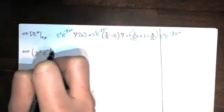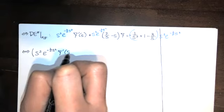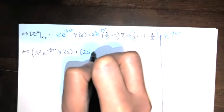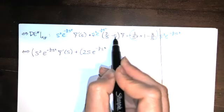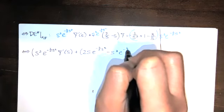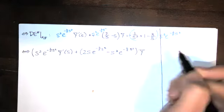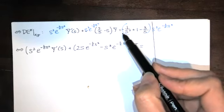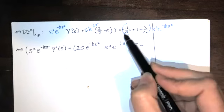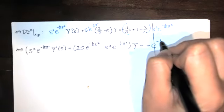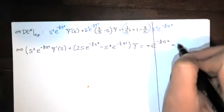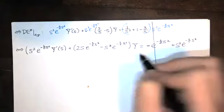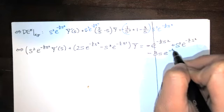Distributing on the right side: the S squared reduces with the 1/S squared term giving negative e^(−S²/2), then S squared times e^(−S²/2), and the S reduces with one S giving minus 3S e^(−S²/2). So the right hand side has three terms: negative e^(−S²/2) plus S² e^(−S²/2) minus 3S e^(−S²/2).